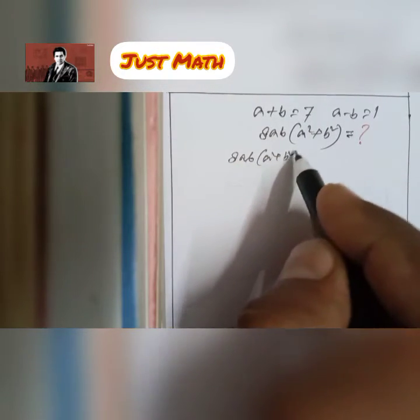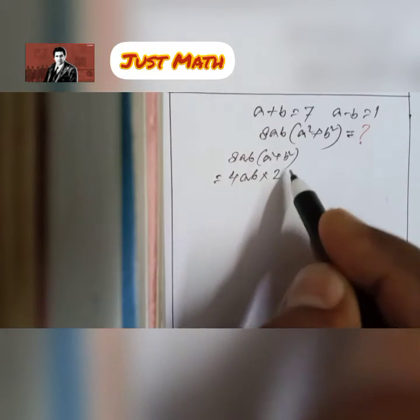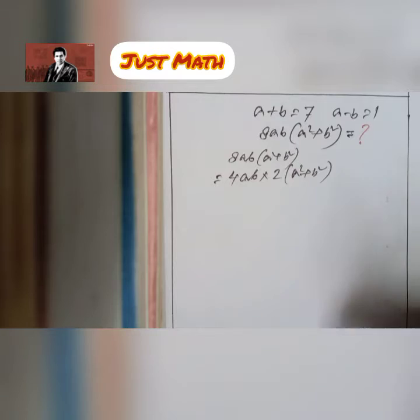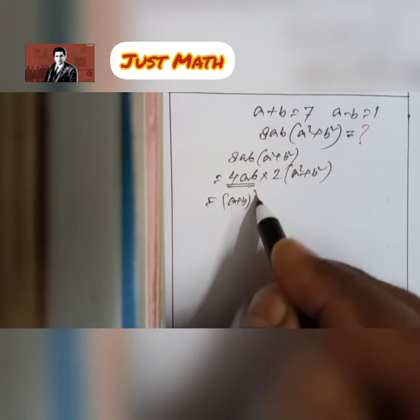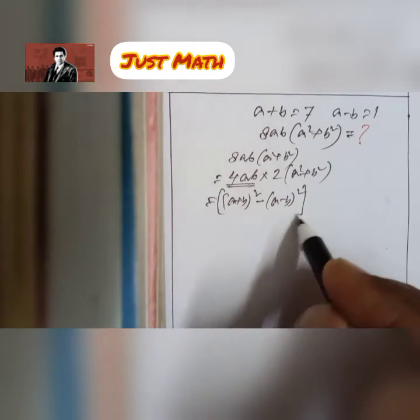8ab into a square plus b square is 4ab multiplied by 2 into a square plus b square. Now the formula of 4ab is a plus b whole square minus a minus b whole square.